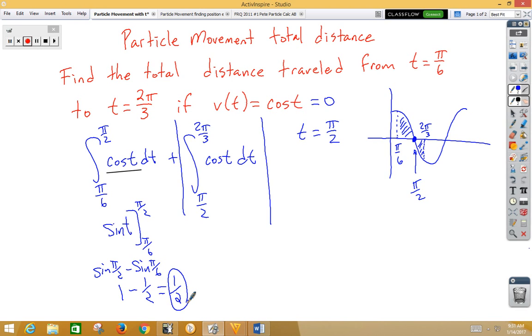In our second area, again, when we integrate cosine, we get sine, and we're going to go from π/2 to 2π/3. So, sine of 2π/3 minus sine of π/2. Well, sine of 2π/3 is √3/2. Sine of π/2 is 1. But we're going to have to take the absolute value of that. So we've got 1/2 plus the absolute value of √3/2 minus 1.